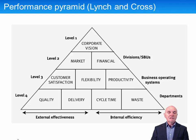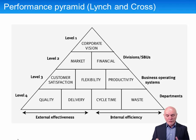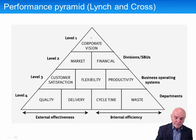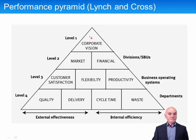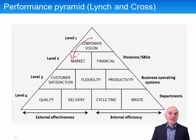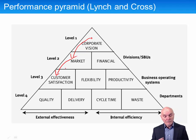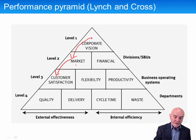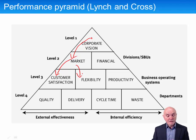The performance pyramid of Lynch and Cross is slightly more complicated to understand. We start at the top of the organization with a corporate vision. The corporate vision will be achieved provided we please the market — we produce goods which please the market — and so we are measuring customer satisfaction. Something else we have to look at in the market is flexibility, because markets and products keep changing, and we have to keep innovating.